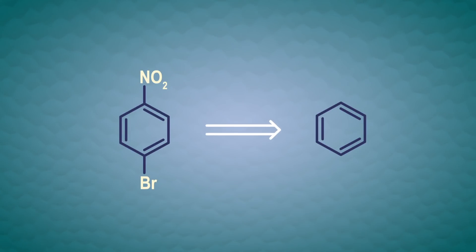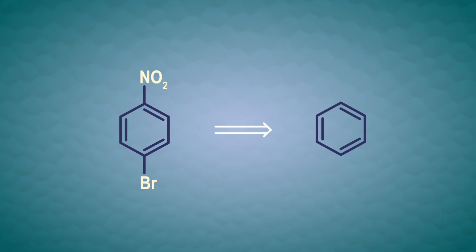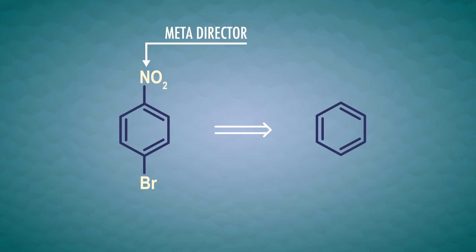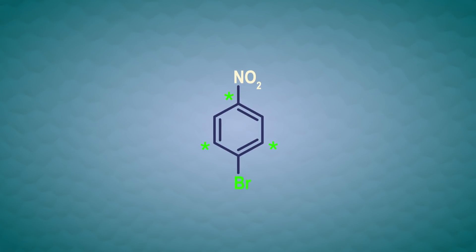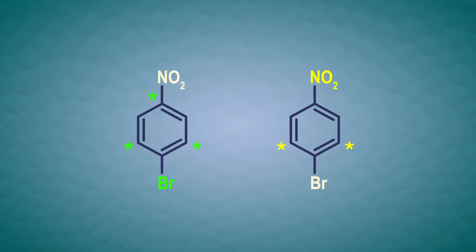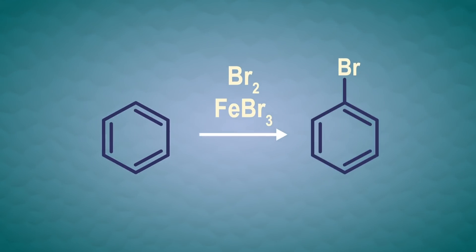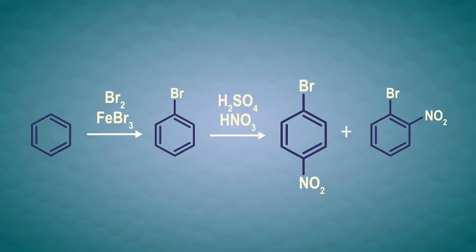Let's do some synthesis problems to reinforce what we've learned about EAS and benzylic reactions. For our first problem, we want to make 1-bromo-4-nitrobenzene, or para-bromonitrobenzene, starting from benzene. The nitro group is an EWG that directs groups meta, while halogens like bromide direct ortho or para. We need to put our bromide on first. In the forward synthesis, we first add bromine to benzene with a ferric bromide catalyst, then nitrate using a mixture of sulfuric and nitric acid. The product is a solid, so we can recrystallize the para-bromonitrobenzene from our mixture of ortho and para products.